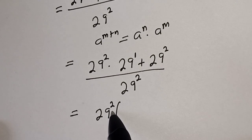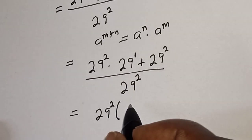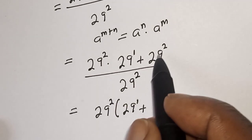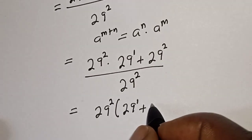29 squared divided by 29 squared, that is 1 times this 29 raised to power 1. This is 29 raised to power 1 plus 29 squared divided by 29 squared, that is 1, over 29 squared.